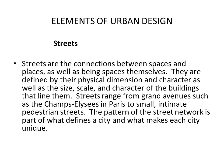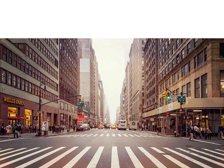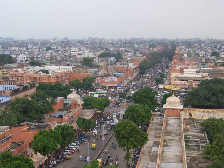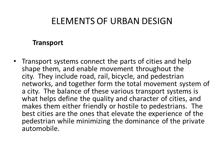The next element is streets. Streets are the connections between spaces and places, as well as being spaces themselves. They are defined by their physical dimensions and character, as well as the size, scale, and character of buildings that line them. Streets range from grand avenues such as the Champs-Élysées in Paris to small intimate pedestrian streets. The pattern of the street network is part of what defines a city and makes each city unique. These are examples of different streets, including one in Jaipur, Rajasthan, India.